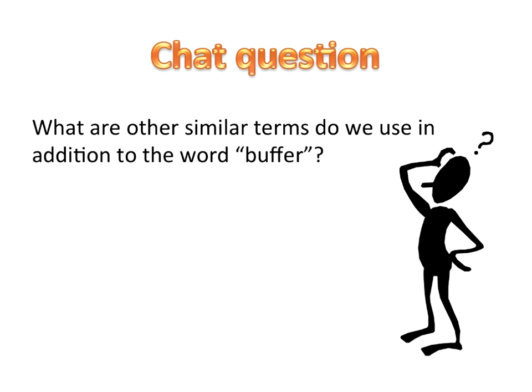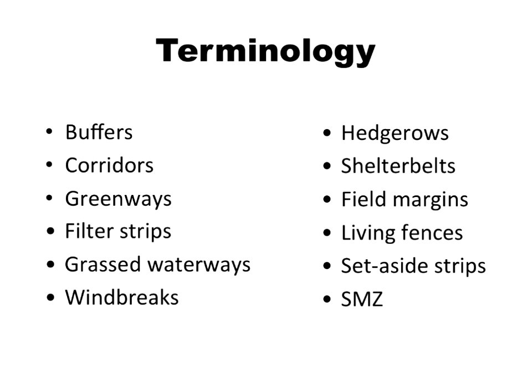We're seeing a nice range of responses: corridors, stream side management zones, filter strips, visual screens. The terminology in the literature is pretty broad. Common terms include buffer corridors, greenways, and filter strips. Some more unusual terms are living fences and even a term called beetle banks. Often these terms are associated with a specific resource issue or function — for instance, buffer suggests water quality, corridor suggests wildlife movement, and greenway suggests aesthetics and recreation.